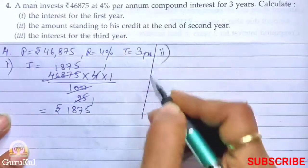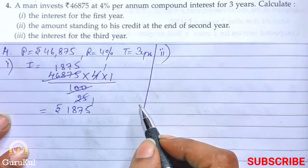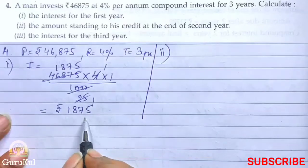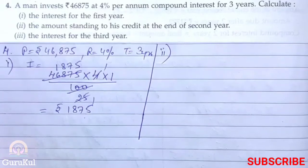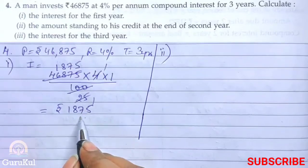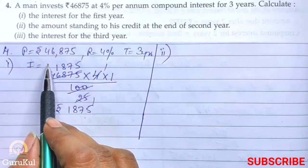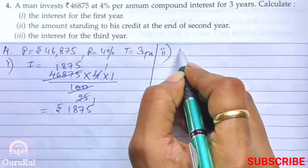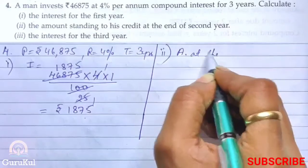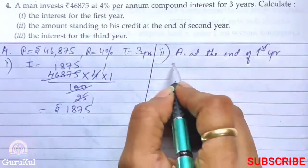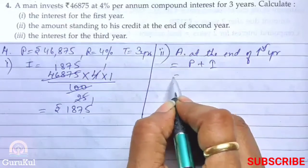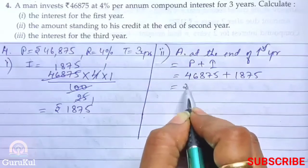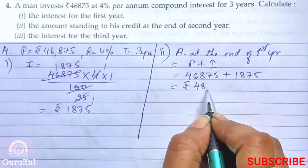Now we will move on to the second part of this sum — we have to calculate the amount standing to his credit at the end of the second year. In compound interest, the interest calculated at the end of the first year is added to the principal. The resulting amount becomes the principal for the second year. So amount at the end of first year equals principal plus interest, that is 46,875 plus 1,875.